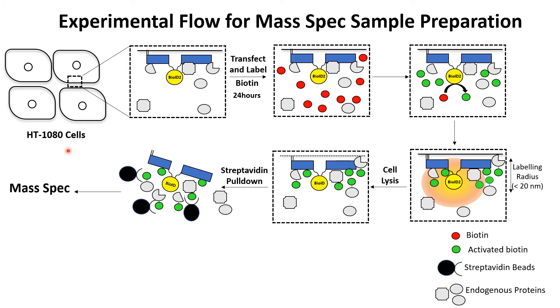HT1080 fibrosarcoma cells were transfected with either G-alpha-I wild-type or QL, and then they were labeled for 24 hours. After the labeling, the cells were lysed and the biotin-labeled proteins were pulled down by streptavidin and submitted for mass spec.